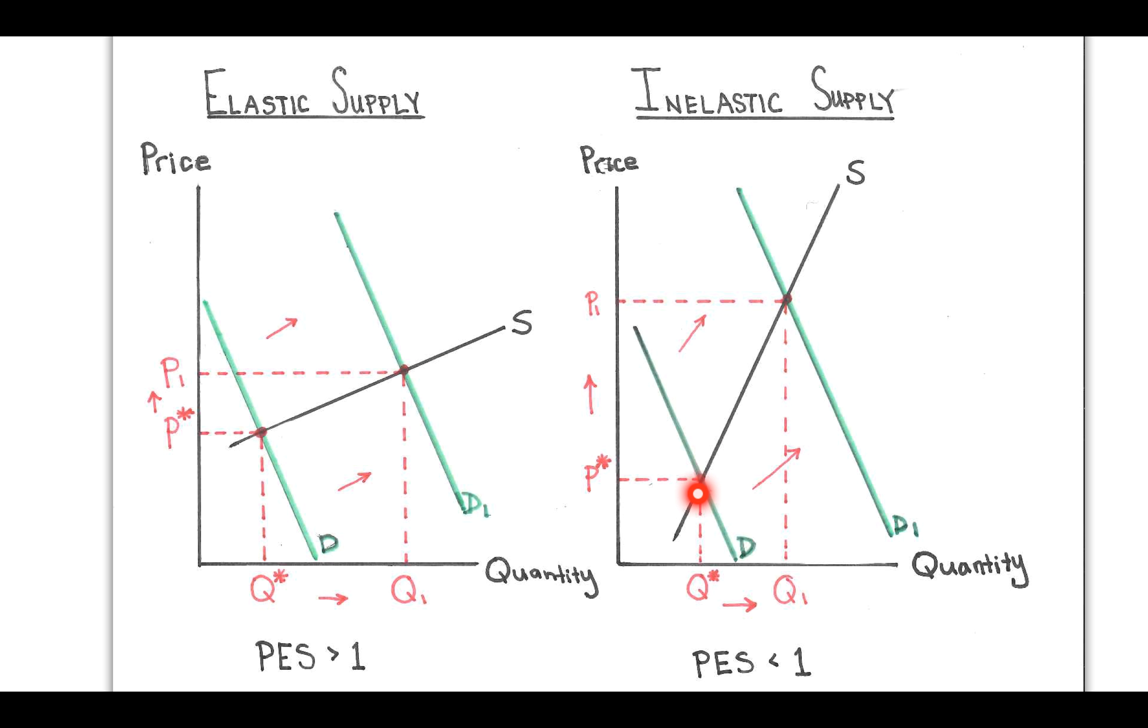And what you'll see happen here is when demand increases for a product that has relatively inelastic supply, the change in quantity results in a more than proportional change in price. What that means is that this percent change in quantity is going to be smaller than the percent change in price.